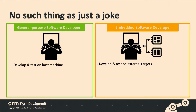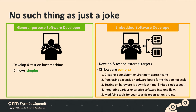A general purpose developer is just developing and testing on a host machine, whereas an embedded software developer has multiple host machines to work on. On the embedded side, you have to maintain a consistent environment across your teams, purchase expensive hardware and board farms that don't scale. Testing hardware is very slow, hardware sometimes has issues, there's lots of enterprise software in the flow, and you have to modify your tools for specific configurations.